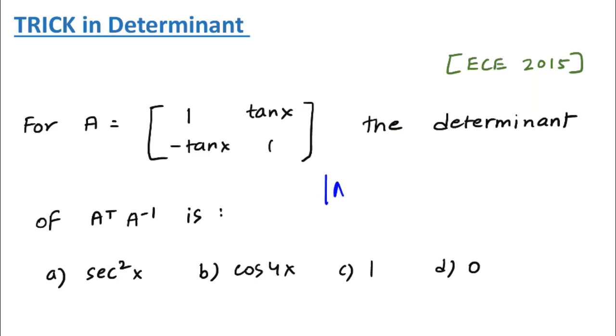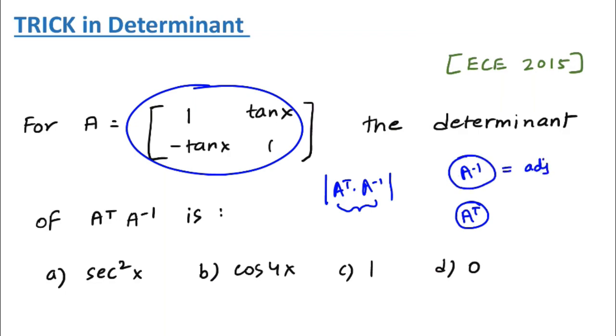If you are following method one, what is your approach? You need the determinant of A transpose into A inverse, which means you need this matrix. You need A inverse and you need A transpose. A transpose is simple - change row and column position and you will get A transpose. But what about A inverse? To get A inverse you need the adjoint of A, then you need the determinant of A. This is the formula: A inverse equals adjoint of A upon determinant of A.